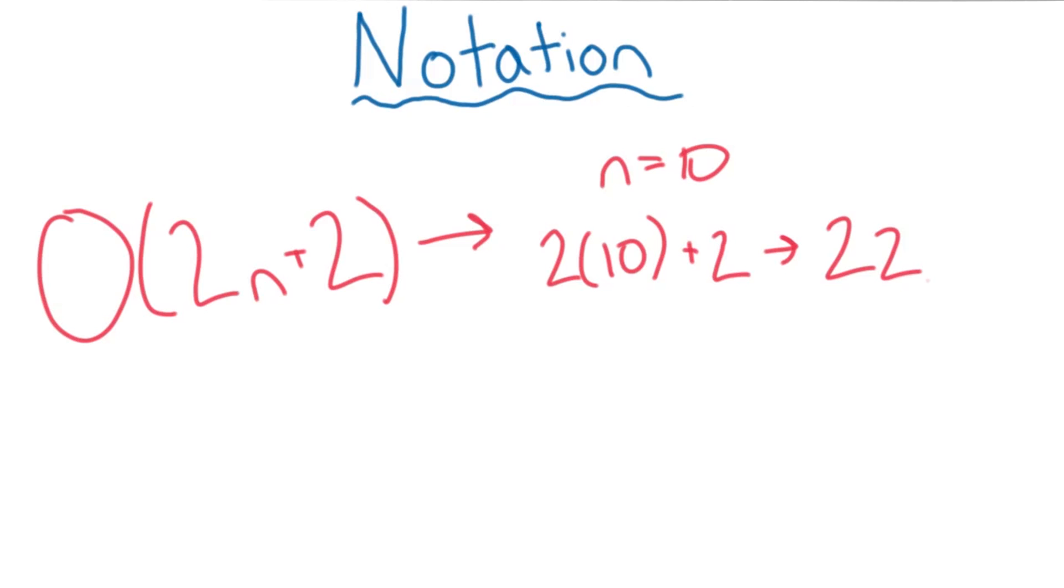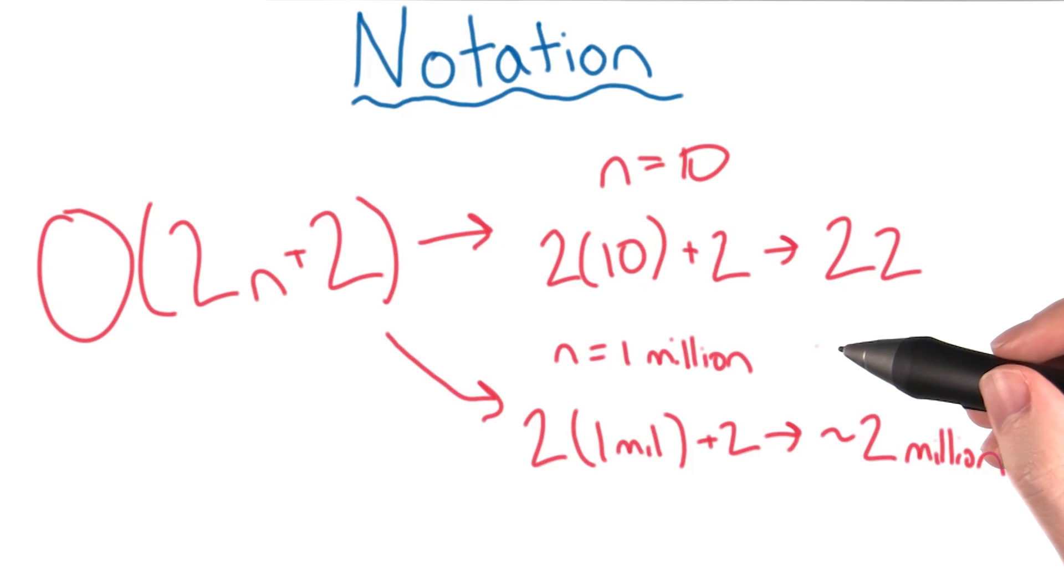To get the actual efficiency, you can multiply 22 times the amount of time it takes for your computer to run one line of code. If the input string was 1 million, you would have to multiply 2 million times the amount of time it takes for your computer to do a computation. There you go, looks like you've got the basics down.